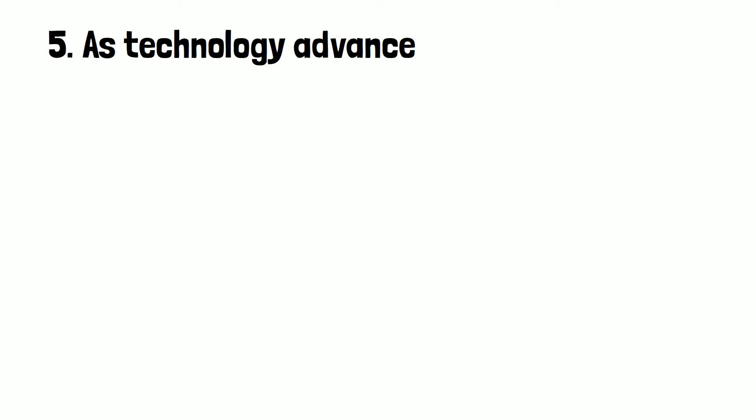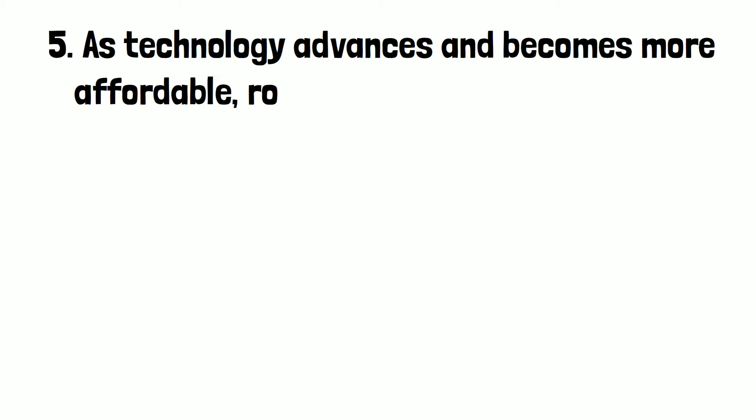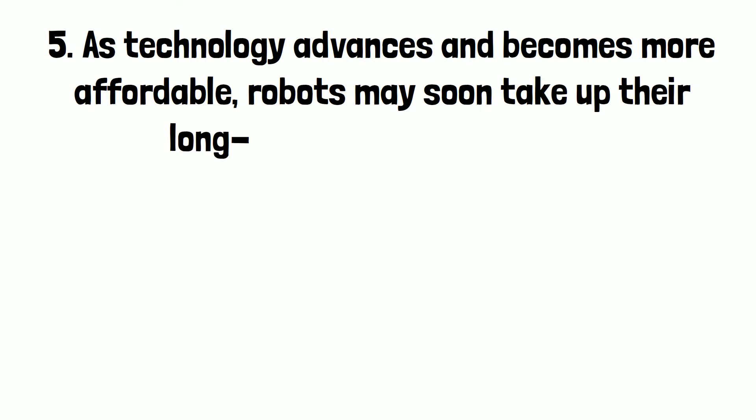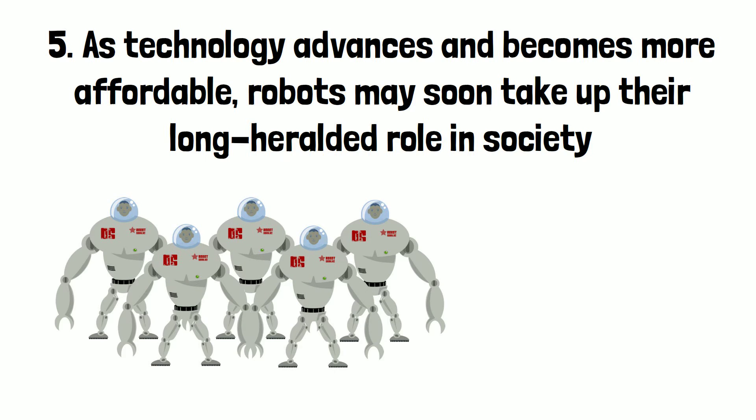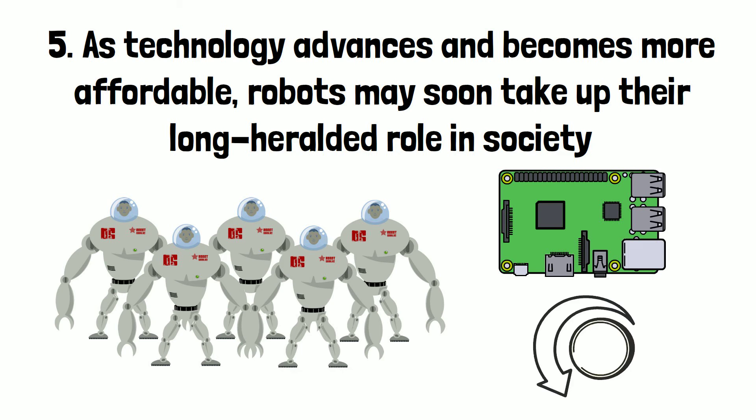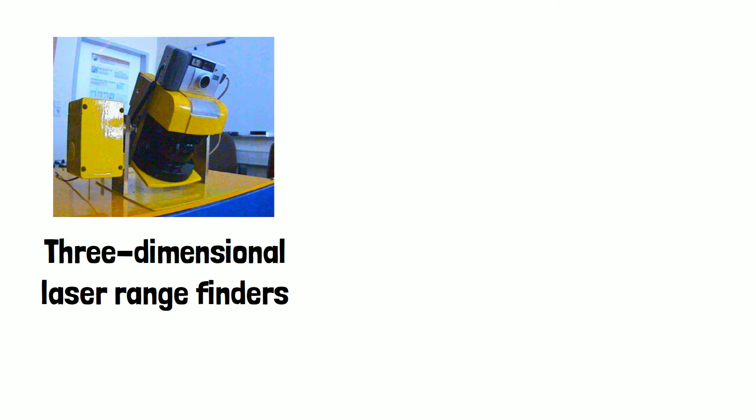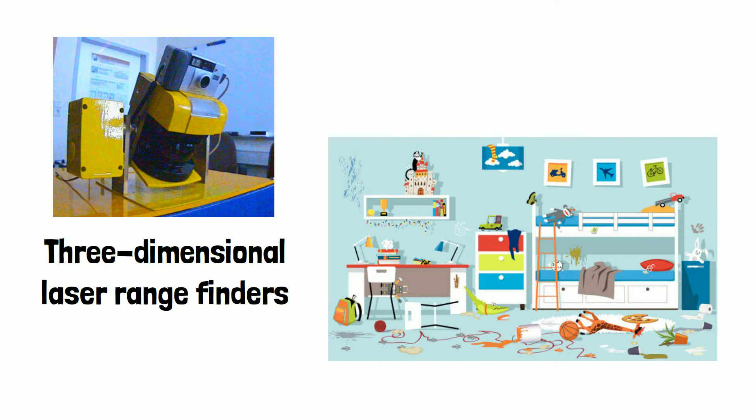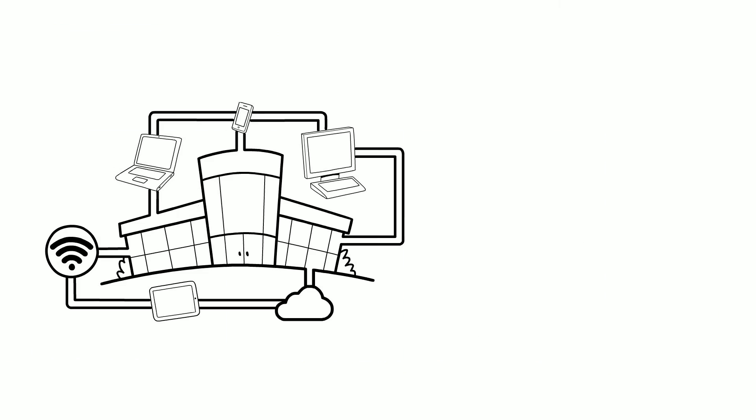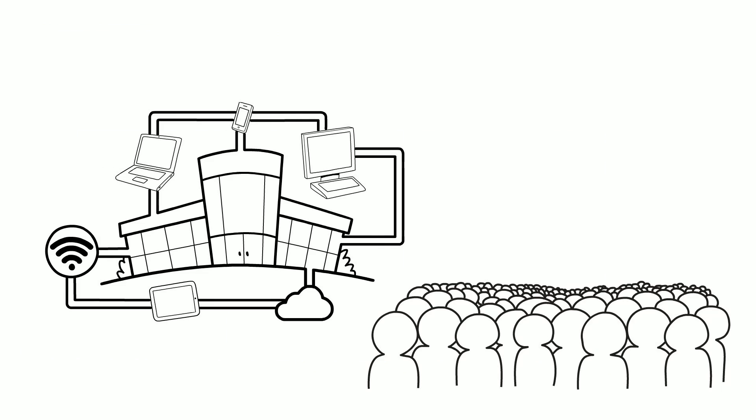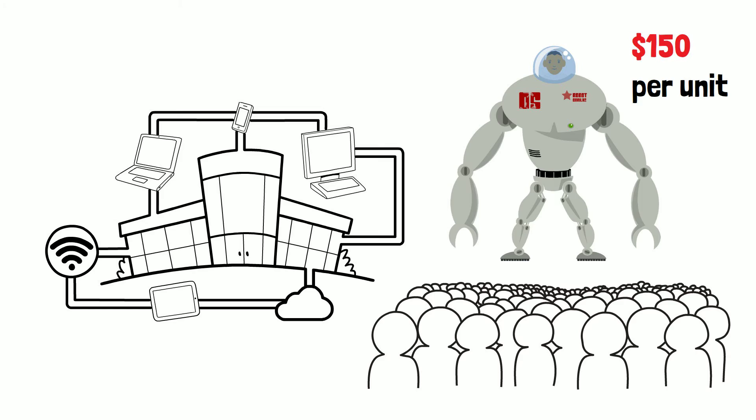Number 5. As technology advances and becomes more affordable, robots may soon take up their long-heralded role in society. Robots are set to take on an increasing role as the price of their components continues to fall. Three-dimensional laser rangefinders, for instance, are a key element in allowing a robot to navigate a cluttered room. While they used to cost $5,000 per unit, recent advances have seen that price drop to $150 per unit.